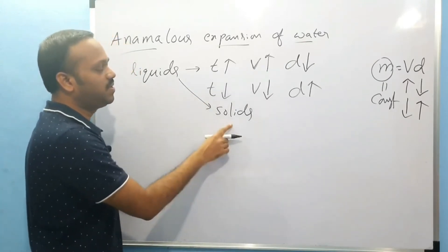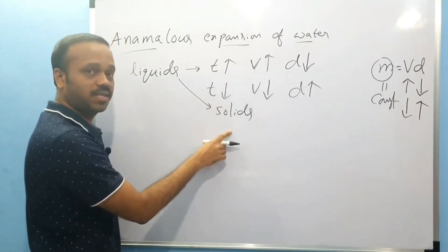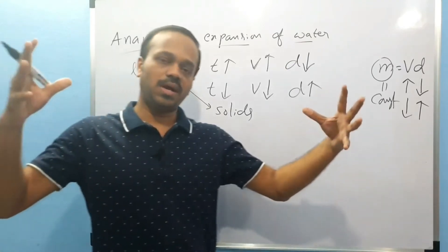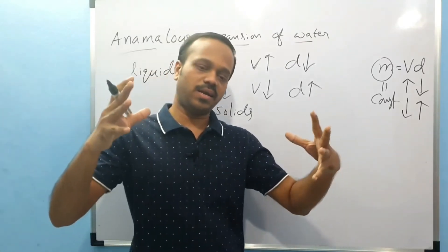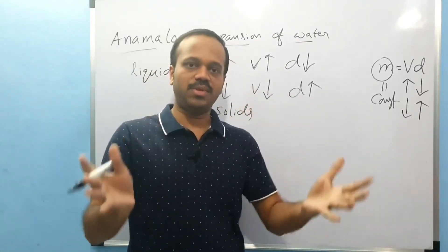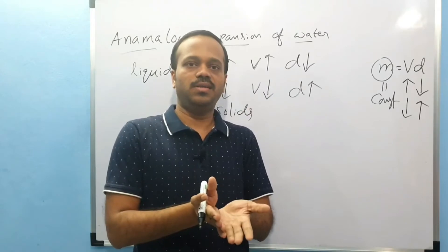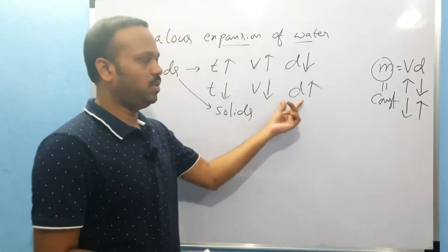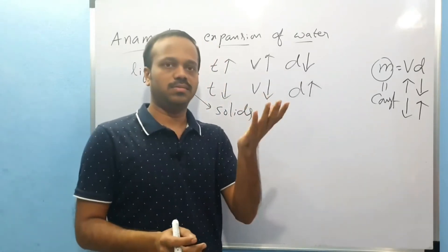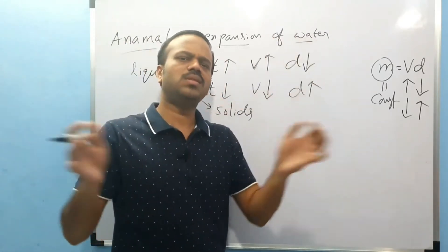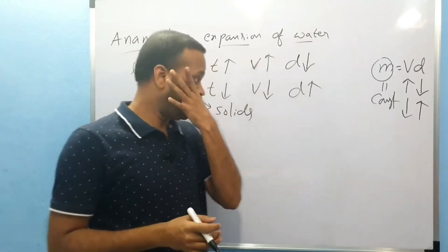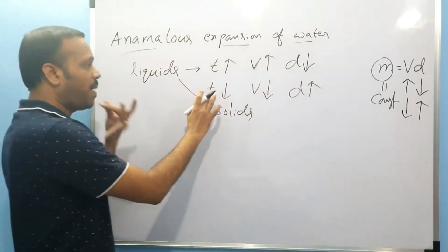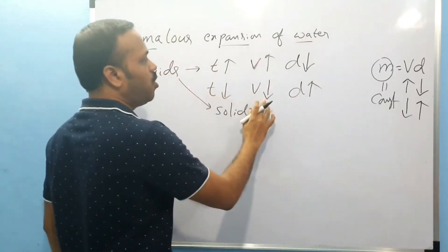Temperature decreases and liquid becomes solid. We have liquid contracting as temperature decreases, and what happens is it becomes solid. Solid density is low. Liquid density is also low. So as temperature decreases, volume is low.